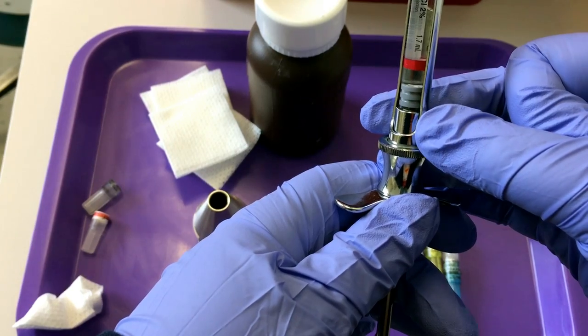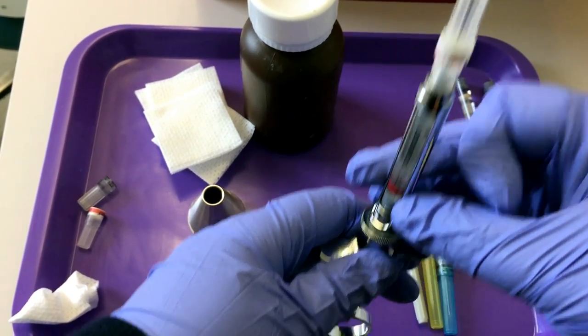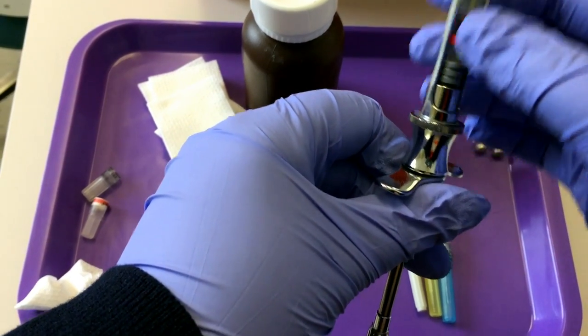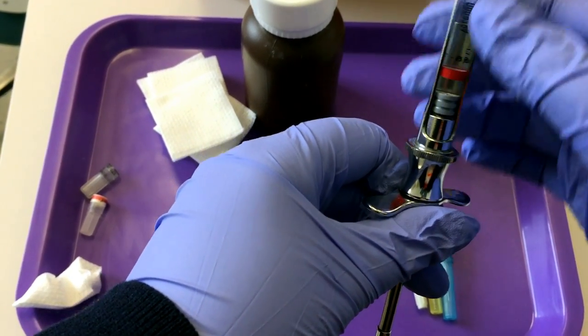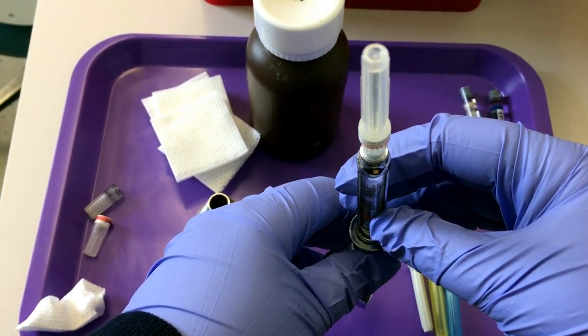Once your harpoon is engaged in the rubber stopper, we want to dispel or dispense any air bubbles that may be in the carpule. We do that by holding the needle vertical.